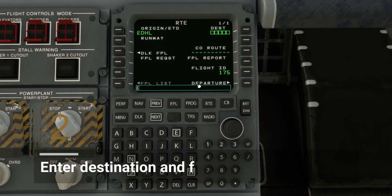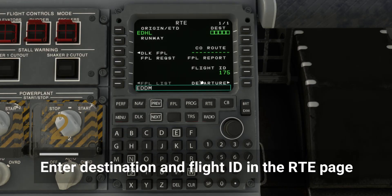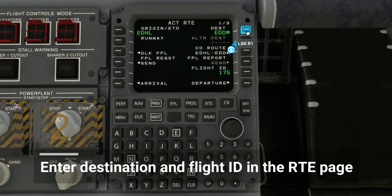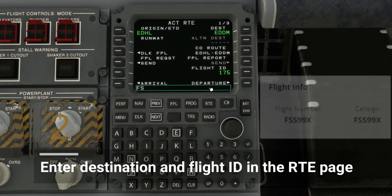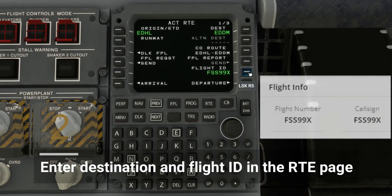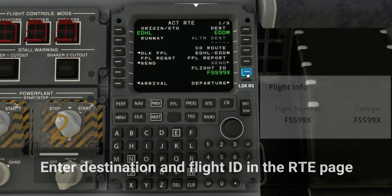Next, enter your destination airport code. Make sure to also input the flight ID that matches your Simbrief flight plan. Remember, the flight ID in Simbrief is called the flight number and can be found in the OFP. Note that the flight ID is not the same as your callsign.